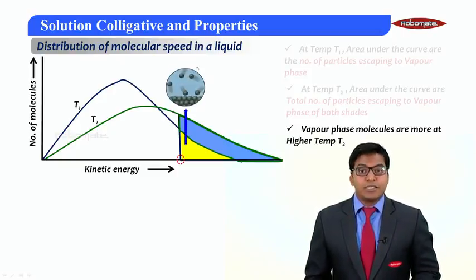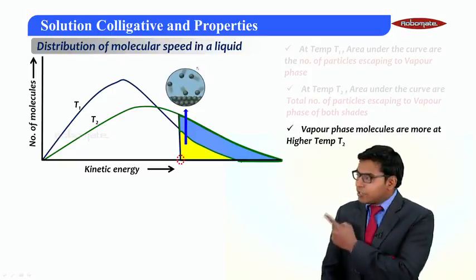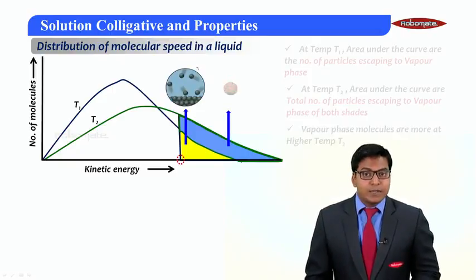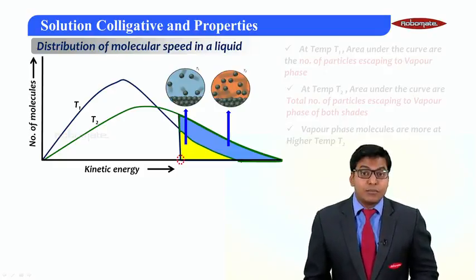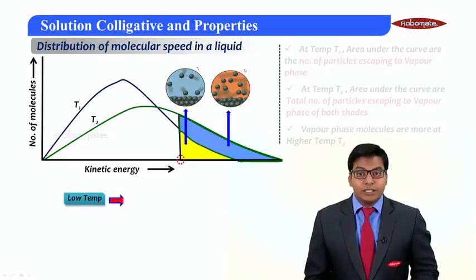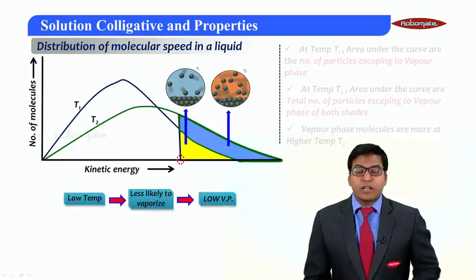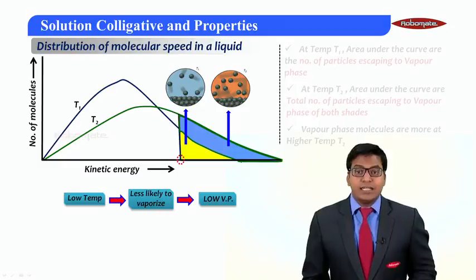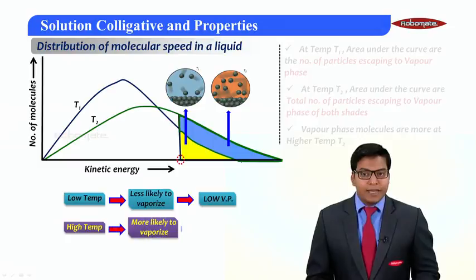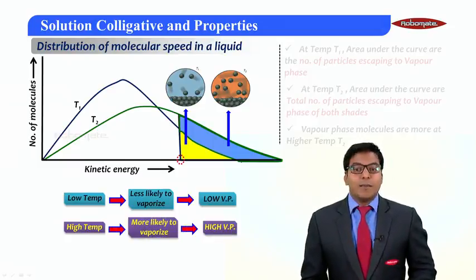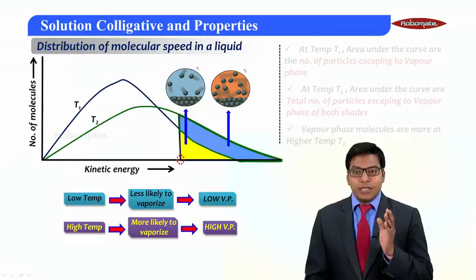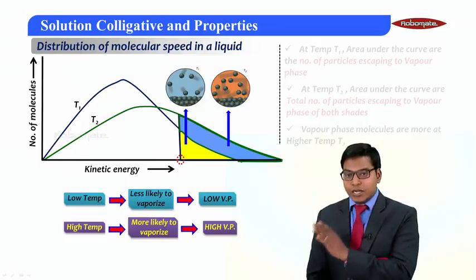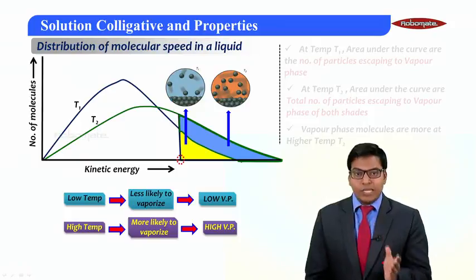You can see it evidently here: at temperature T1, the number of molecules escaping are very less, but at temperature T2, the number of particles escaping are more. Therefore, low temperature is equivalent to low vapor pressure, while high temperature is equivalent to high vapor pressure. So you can now relate how vapor pressure and temperature are correlated to each other.